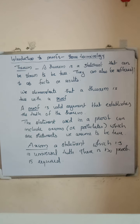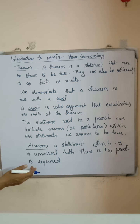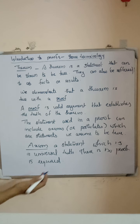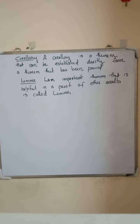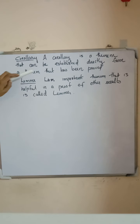For proving a theorem, we use axioms or postulates. An axiom is a statement which is universally true — there is no proof required. For example, the fact that 1, 2, 3, etc. are integers is universally true and requires no proof. That type of statement is called an axiom.